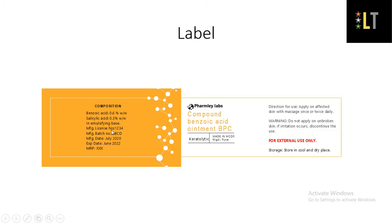The label also requires the manufacturing license number, batch number, manufacturing date, expiry date, and MRP. In directions for use, write: apply on affected skin with massage once or twice daily. The warning states you should not apply it on broken skin, and if irritation occurs, discontinue use. It is very important to mention 'For External Use Only' in red, bold, capital letters. Storage should be mentioned as: store in a cool and dry place.